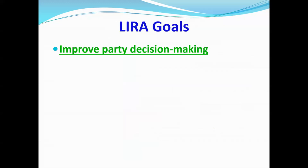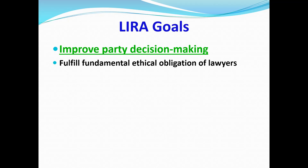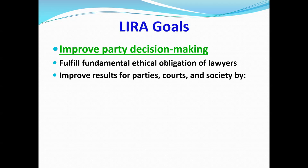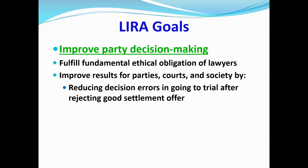So what's the goal of LIRA? It's improved party decision-making. This is a fundamental ethical obligation of lawyers in the United States, at least, and I suspect in most if not all countries. Lawyers are agents of parties. The parties are the principals — they're the ones who should be making the decisions about the major goals and ways to handle cases. Obviously, lawyers make many decisions about how to actually implement strategies to achieve those goals.